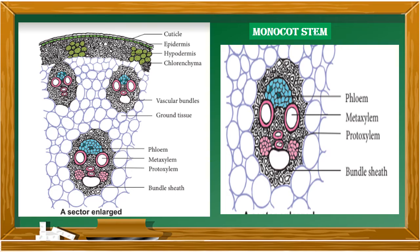The next layer beyond the epidermis is the hypodermis. In the diagram, you can see 5 to 6 layers. In between, you find green-colored cells which are the chlorenchyma, and between the chlorenchyma is the sclerenchyma. So sclerenchyma and chlorenchyma together form the hypodermal region. Sclerenchyma provides mechanical support.